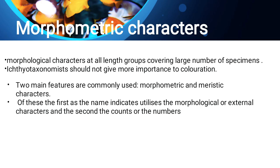If the fish is decayed or there are many microbial attacks, then the fish's color changes. So morphological character alone is not sufficient. What are the two main features for classification? Morphometric character and meristic character. In the next slide, we will see what morphometric character and meristic character are.